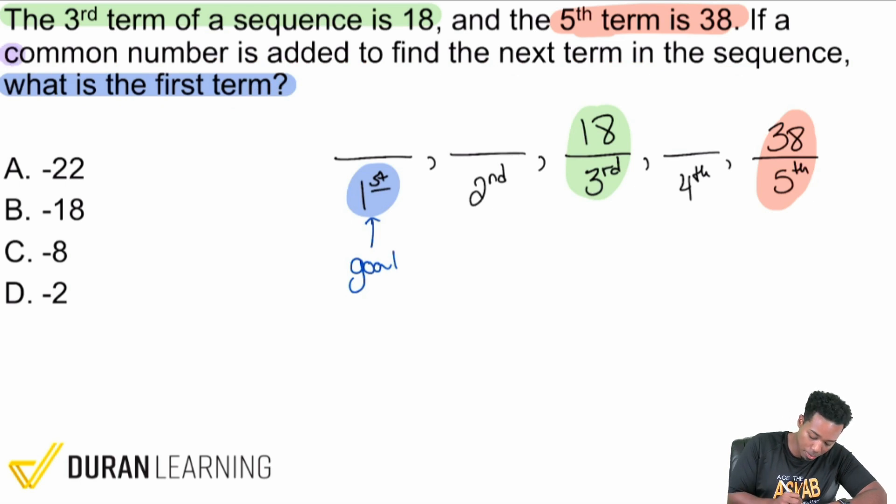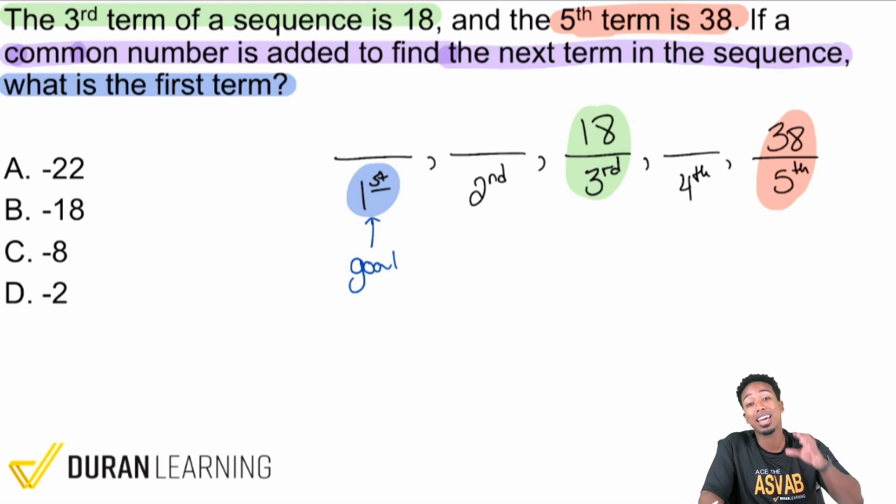That's very important here - a common number is added to find the next term in the sequence. What does that mean everybody? That means, tell me, is this true or false: if you're adding a common number, it means that you're adding the same thing every time to get from the next term to the next term to the next term. That's what that means right there. Yeah, in purple, a common number being added to find the next term in the sequence means that you're adding the same thing from one to the next to the next.